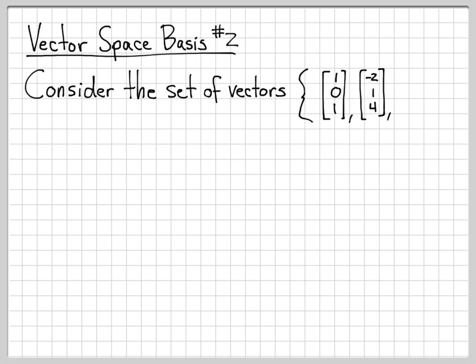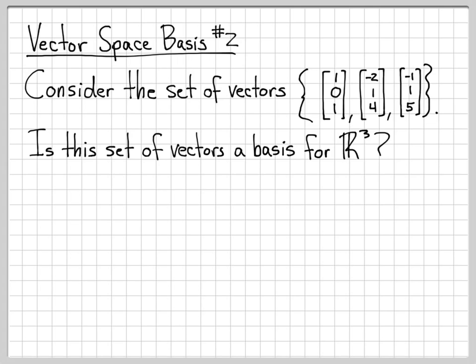In this example, we're going to change things just slightly. We're going to work with a set of three vectors, but the final vector this time is [-1, 1, 5]. So these are the three vectors. And we're asked the same question, is this set of vectors a basis for R³?